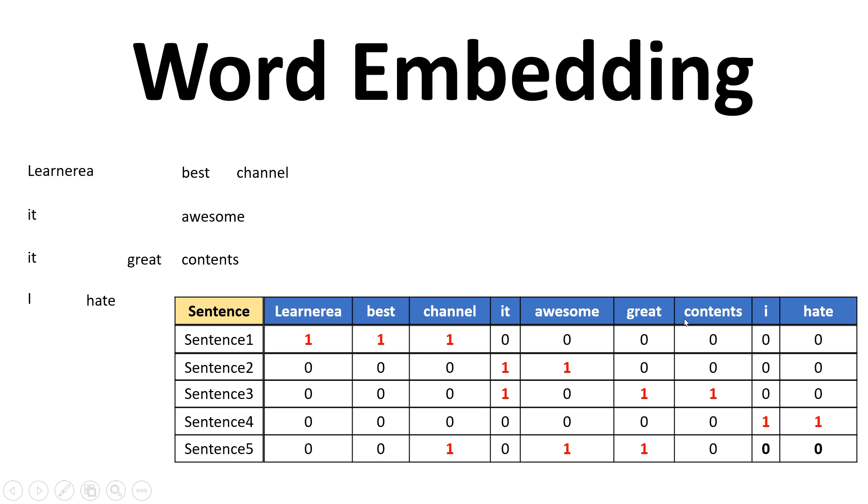So this could be an example of one-hot encoding. Similar thing happens in bag of words also, but numbers get repeated in bag of words. I mean it will be more than one if the particular word gets repeated in the sentence. So this is word embedding in a nutshell.